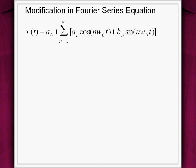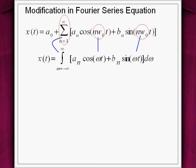The Fourier series equation is then modified to obtain the equation for Fourier transform. These modifications include changing summation to integration and replacing the discrete frequency nω₀ with continuous frequency ω.